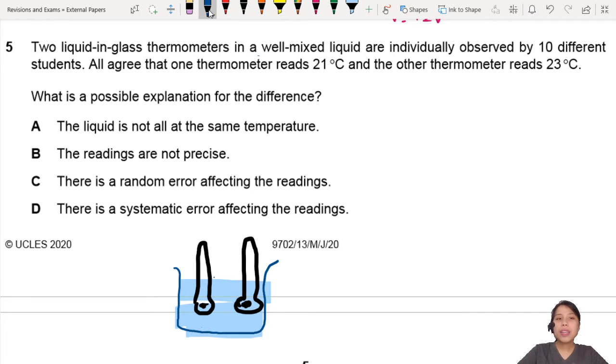So in one of the thermometers it reads 21 degrees Celsius, but the other one says 23. They don't agree, but 10 different students agree though - 10 different people read it and they say this is 21, this is 23.